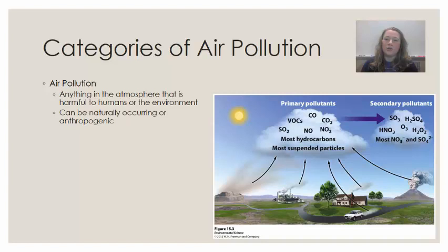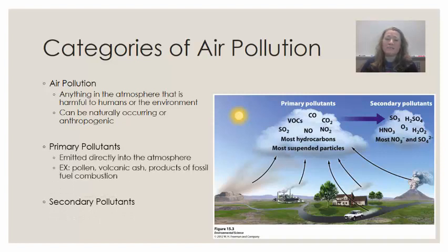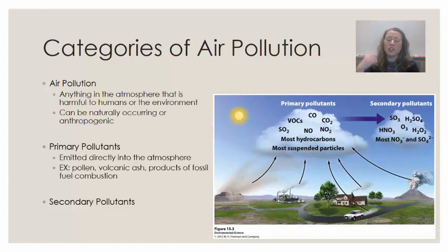There are two categories of air pollution: primary pollutants and secondary pollutants. Primary pollutants are anything that is emitted directly into the atmosphere from some kind of activity. These are things like pollen emitted directly from plants, volcanic ash directly from a volcano, or products of fossil fuel combustion emitted directly into the atmosphere.